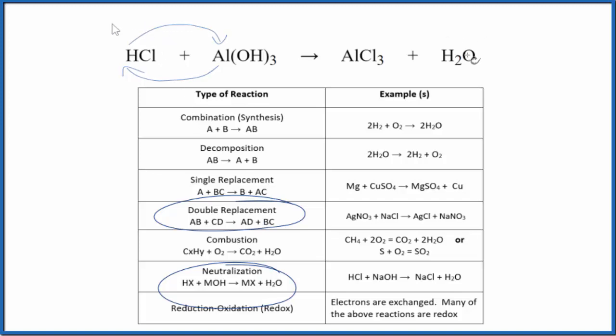Let me balance it really quickly. So we have one chlorine here and three here. Let's put a three in front of the HCl. That balances the chlorines. Looks like if we put a three here, we'll have three hydrogens, three hydrogens. So six here, that's balanced. Three oxygens, three oxygens. This is the balanced equation.